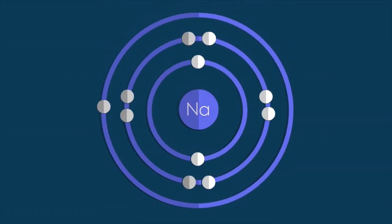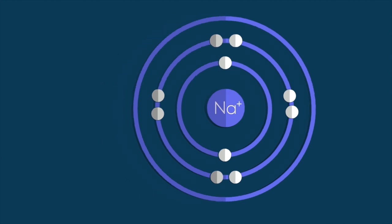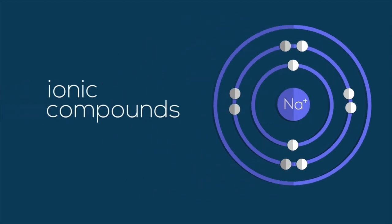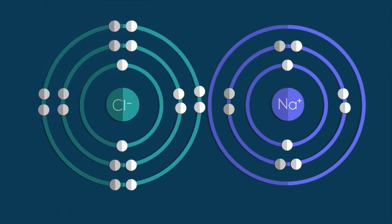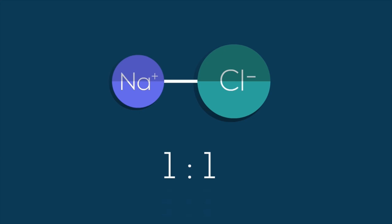Look at sodium. It has one electron in its outer shell, which it loses to form sodium plus. It then forms ionic compounds to neutralize charge. So if it meets a chlorine minus, they form sodium chloride at a one-to-one ratio.